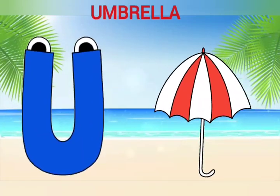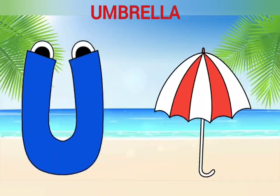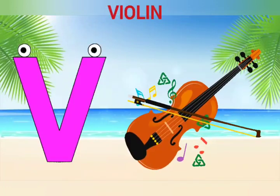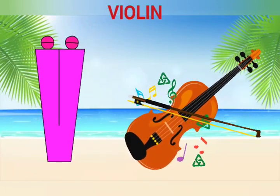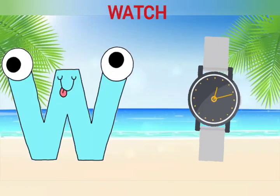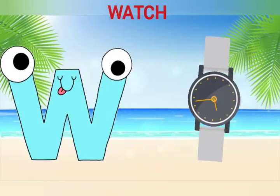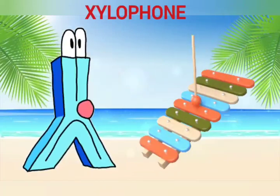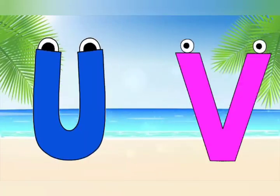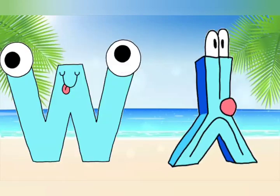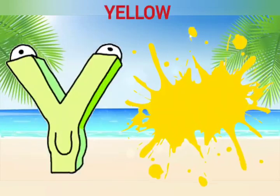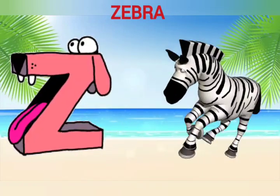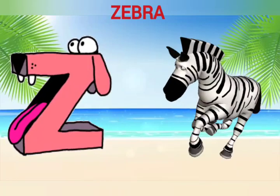U is for Umbrella, U-U-Umbrella. V is for Violin, V-V-Violin. W is for Watch, W-W-Watch. X is for Xylophone, X-X-Xylophone. Y is for Yellow, Y-Y-Yellow. Z is for Zebra, Z-Z-Zebra.